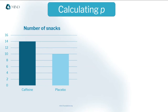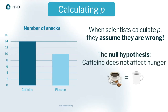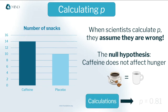And this part is really essential. Before calculating, scientists always assume that they are wrong and that there is no difference between the groups. This is called assuming the null hypothesis. So I assume that I'm wrong and that caffeine has no effect on hunger. And with that assumption, I calculate the p-value.